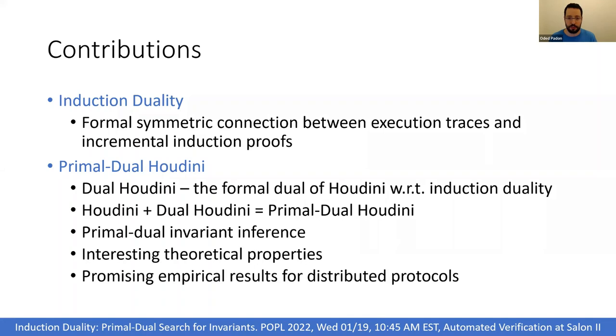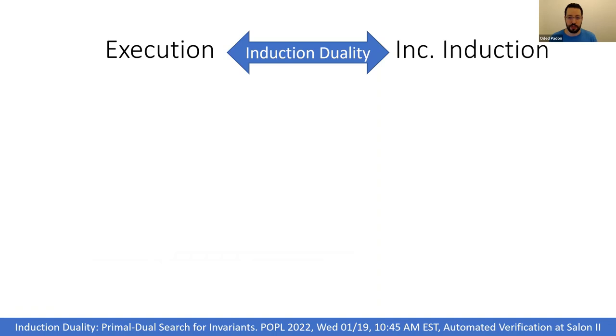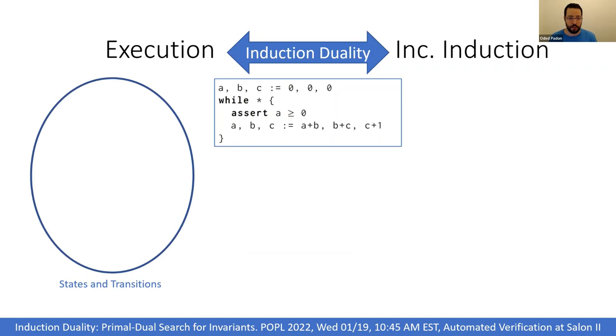To give you a little bit of the flavor of the new induction duality, consider this simple program that manipulates three variables. We can think of the state and transitions graph of this program. The initial state is (0,0,0) where all variables are 0. From this state we can get in one step to this state where A and B are 0 and C is 1.